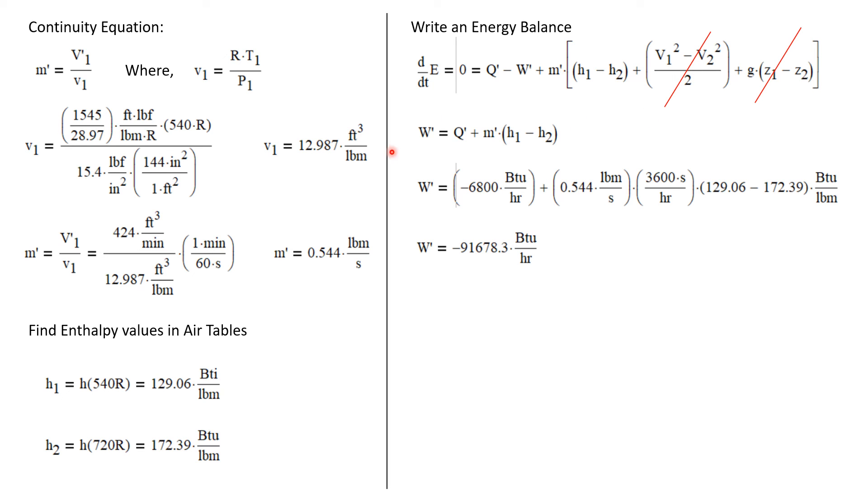So we'll simplify and rearrange this equation and we'll solve for the power requirement, which is just Q dot plus M dot times H1 minus H2. We have all of these values.